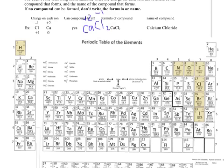To write its name, I say calcium — I do not need Roman numerals because calcium always forms a plus 2 and nothing else, so I don't have to clarify. And then chlorine changes its name to chloride.